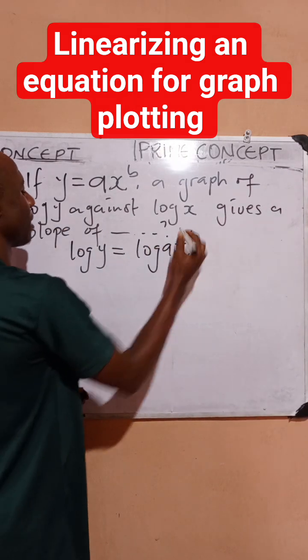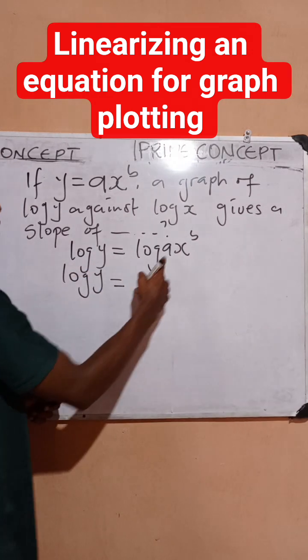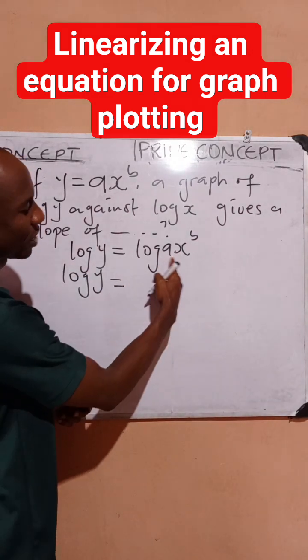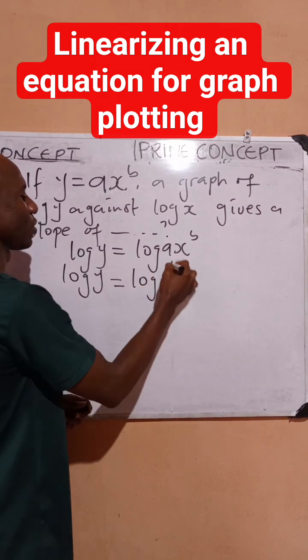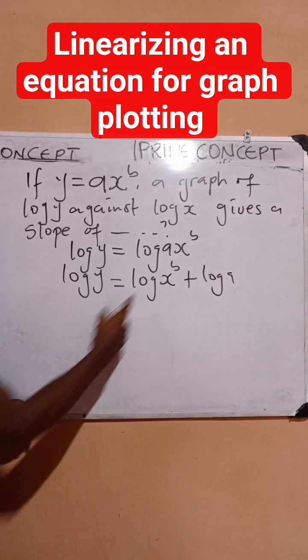...ax to power b. So we can have that log y equals... by what we know in logarithm rules, we'll separate this, so it equals log(x to power b) plus log a. That's what we know, and then we...